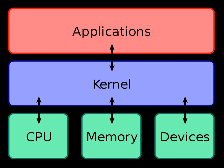Microkernels were invented as a reaction to traditional monolithic kernel design, whereby all system functionality was put in one static program running in a special system mode of the processor. In the microkernel, only the most fundamental of tasks are performed, such as accessing some of the hardware, managing memory, and coordinating message passing between the processors. Some systems that use microkernels are QNX and HERD. In the case of QNX and HERD, user sessions can be entire snapshots of the system itself.